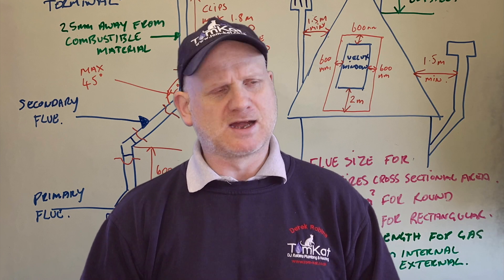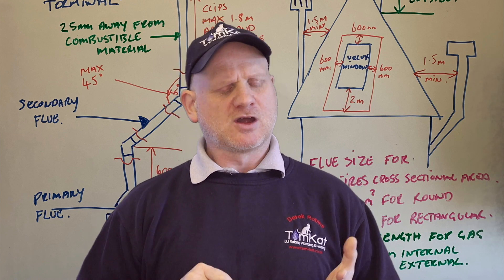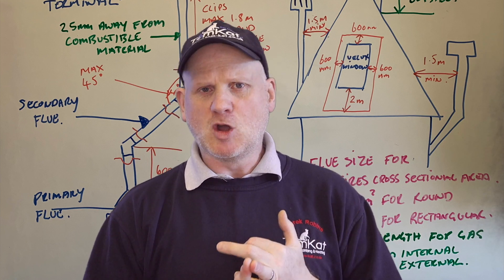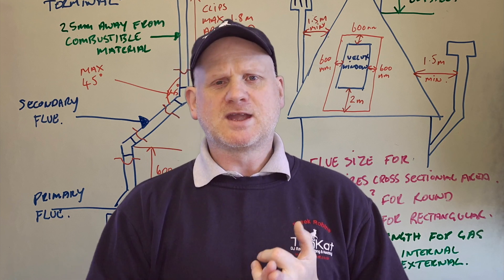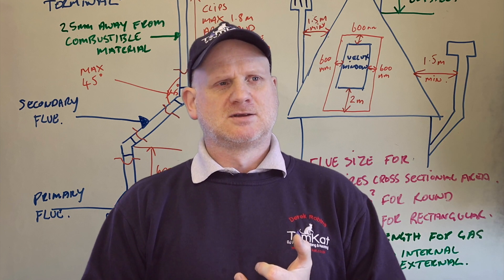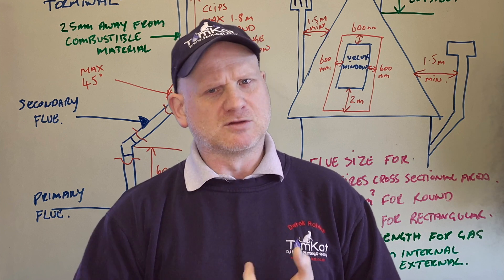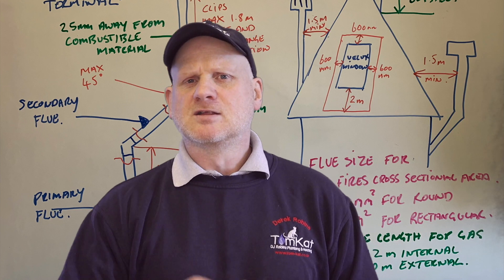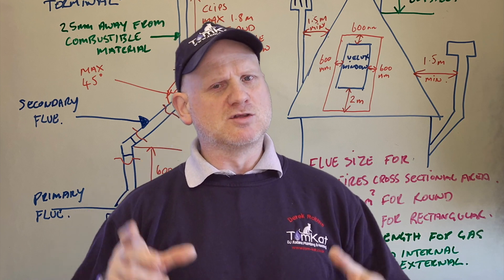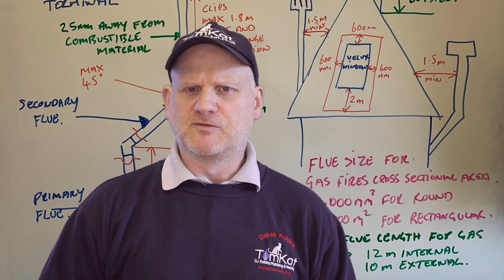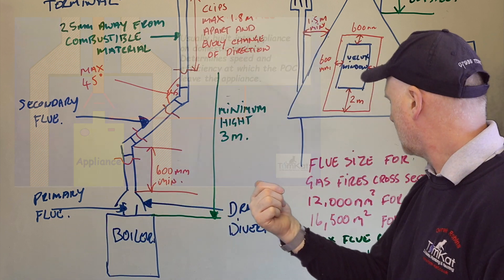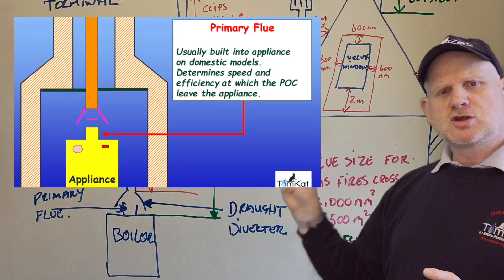We're going to look at type B appliances — open flue. We can have open flue boilers, open flue water heaters, and open flue fires. We don't have open flue cookers — they're flueless. Let's start by looking at the different components on an open flue boiler.